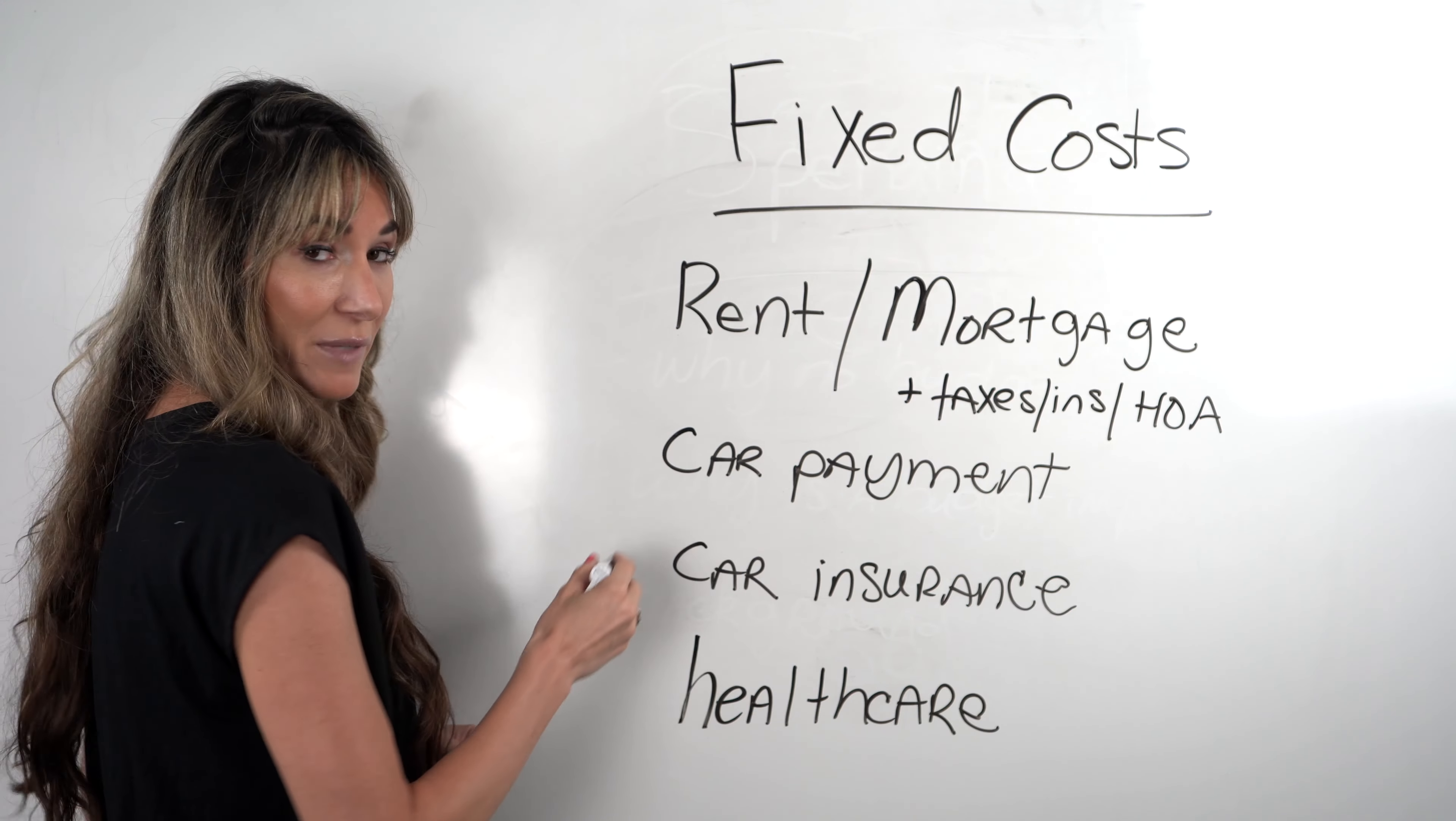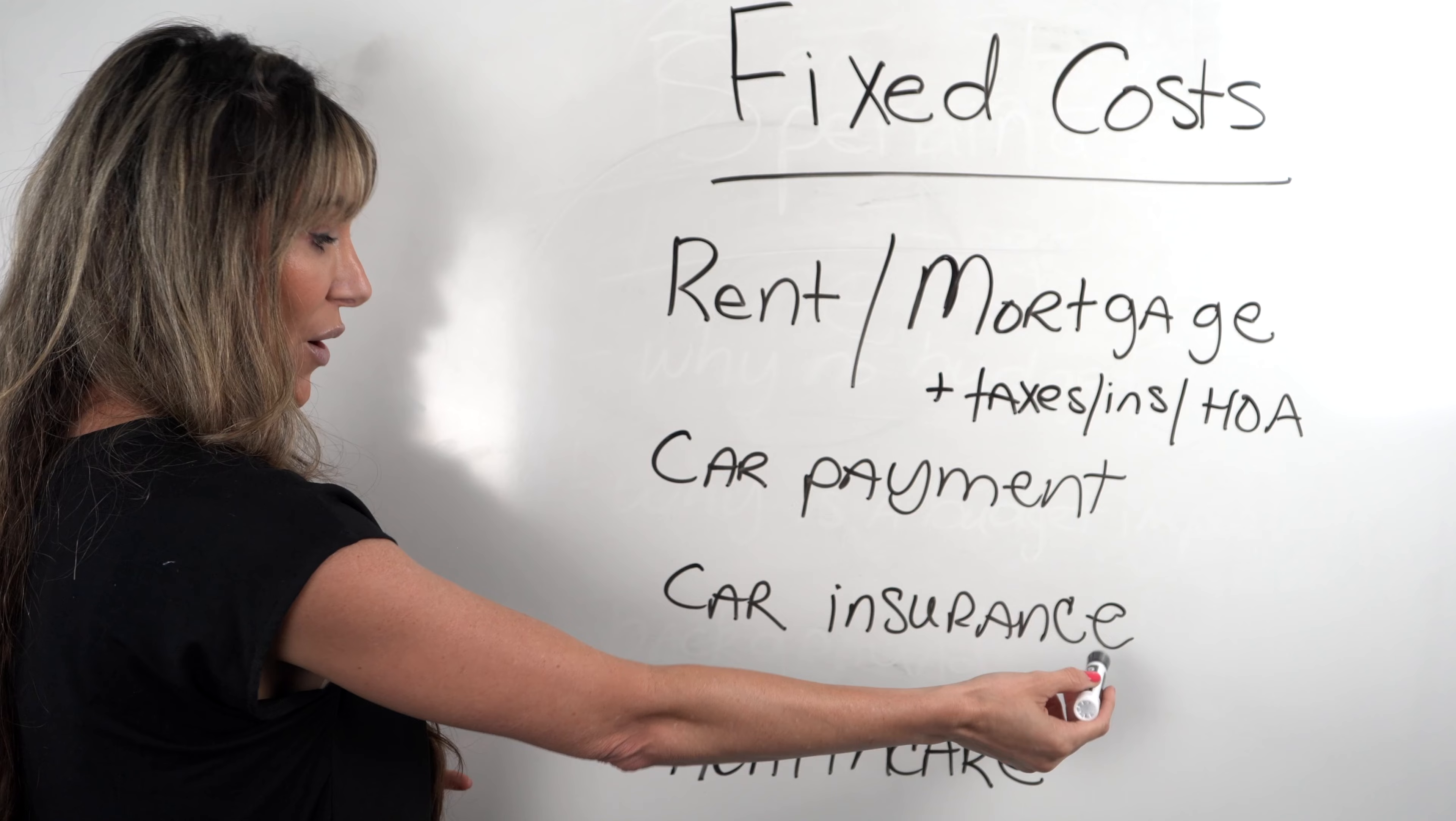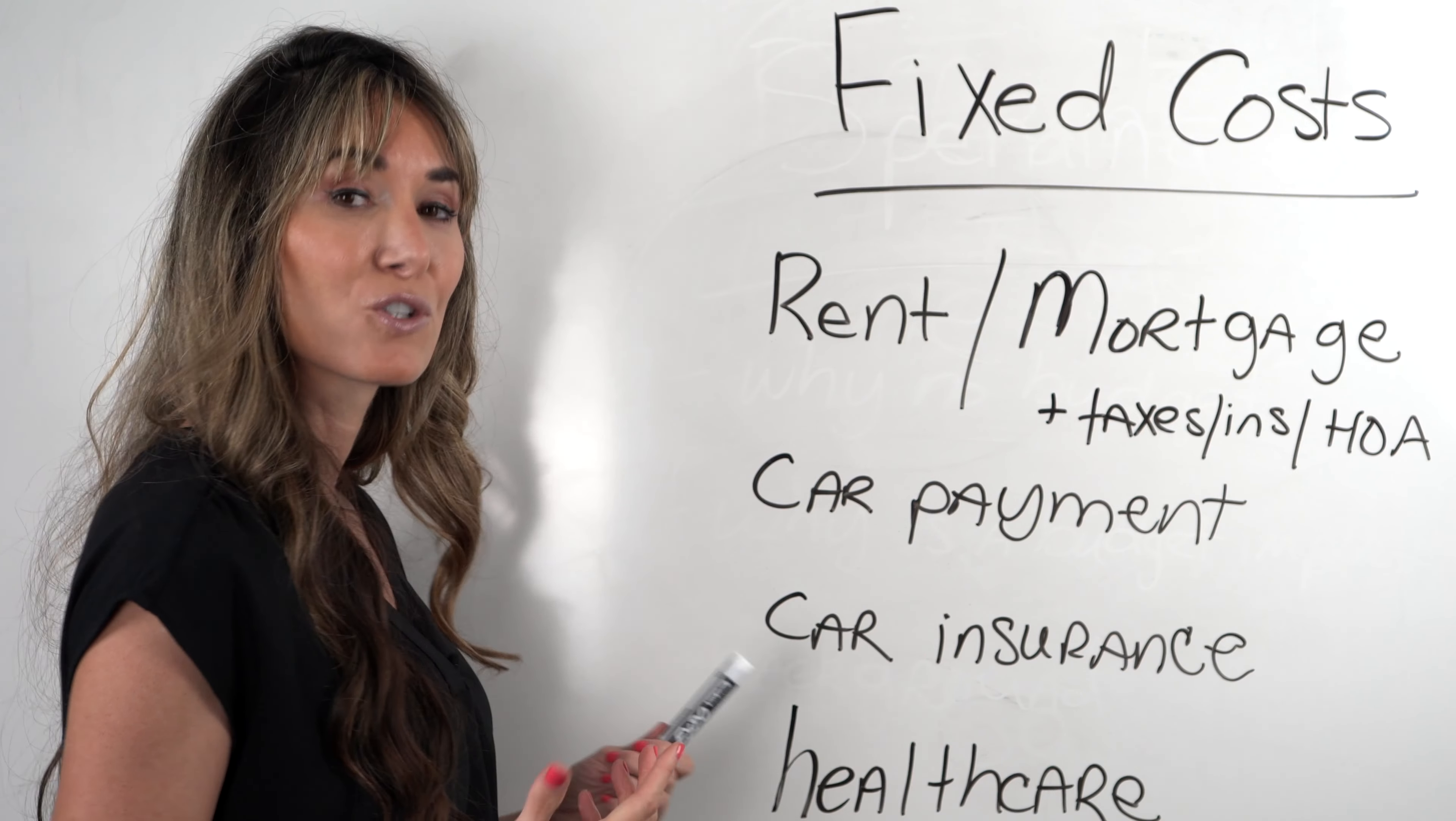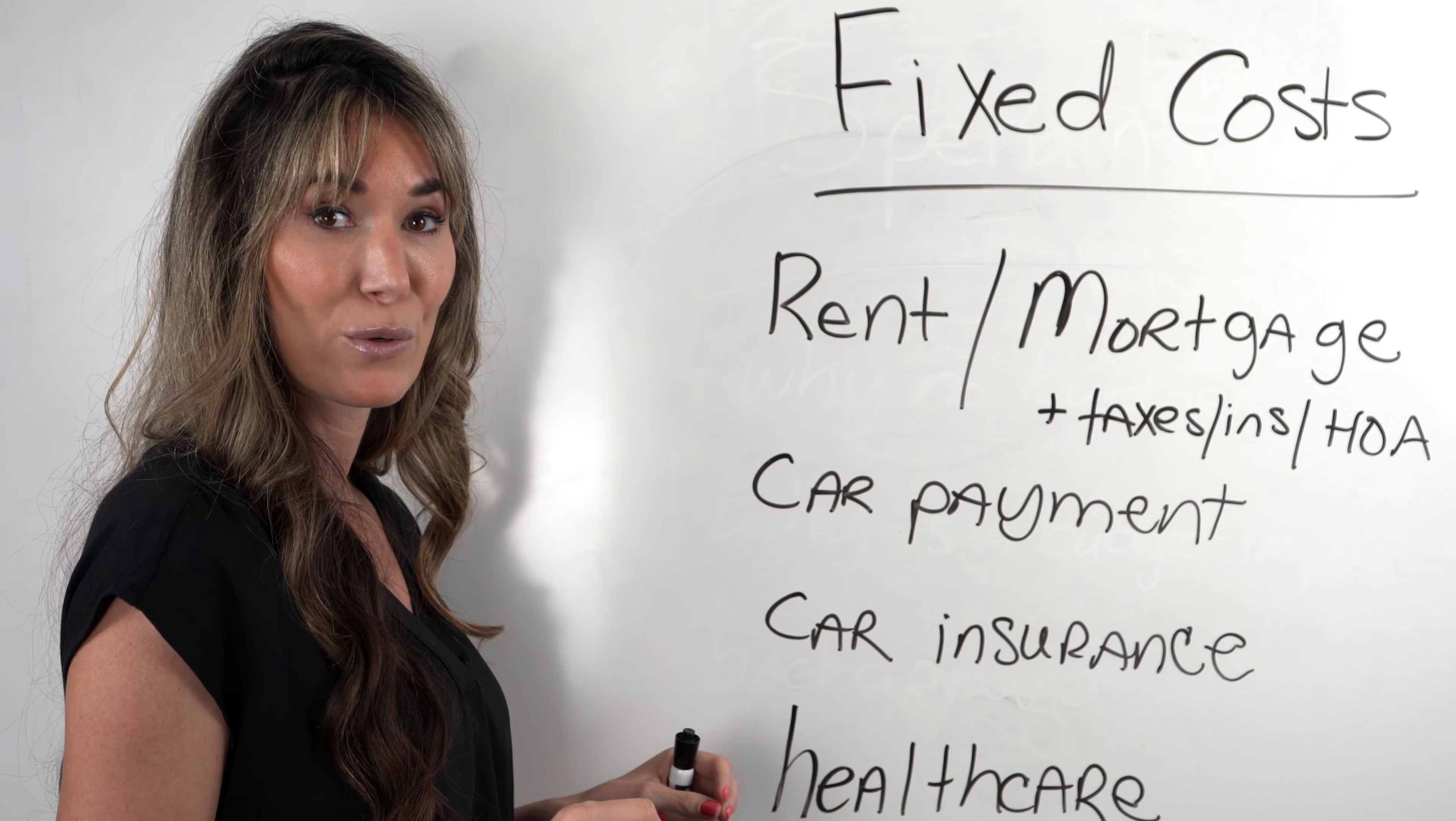Next is a car payment. If you have a car payment, that should be a known payment that you have every month as well, and the car insurance and also healthcare premiums. What is that going to cost on a monthly basis? Now this isn't all inclusive, but this is the majority of the costs that you'll have on a monthly basis that you know are going to stay fixed that you can budget easily for.